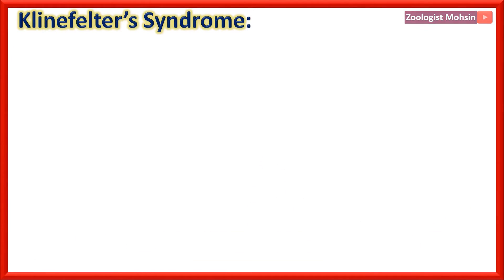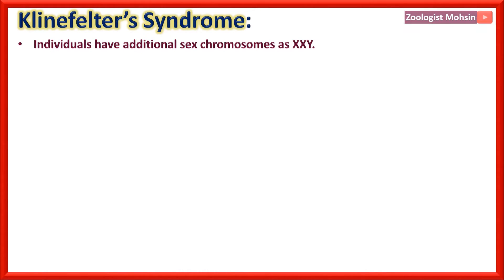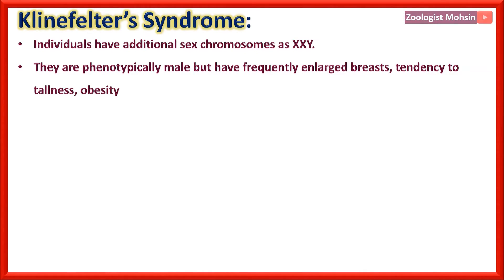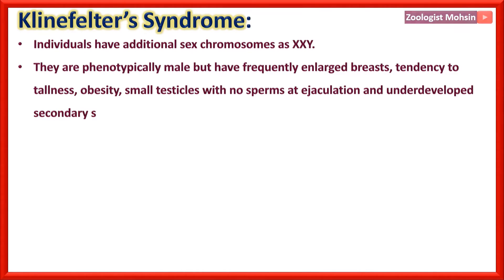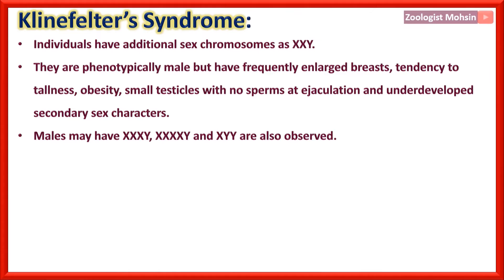Klinefelter syndrome: individuals have additional sex chromosomes as XXY. They are phenotypically male but frequently have enlarged breasts, tendency to tallness, obesity, small testes with no sperms at ejaculation, and underdeveloped secondary characters. Males may have XXY, XXXY, or XYY combinations in Klinefelter syndrome.